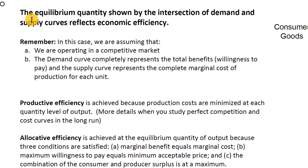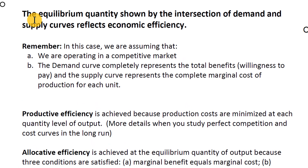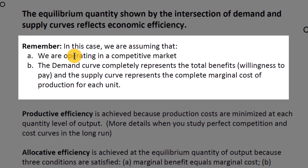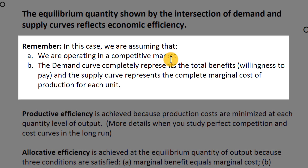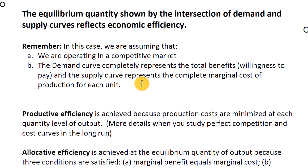Proving efficiency is a bit complicated, but we want you to grasp it intuitively. We're assuming a competitive environment — perfect competition means many small buyers and sellers producing and consuming the same thing, with no monopolies. We're also assuming the demand curve completely represents total benefits, meaning no externalities — no positive or negative externalities. The supply curve represents the complete marginal cost of production, so there's no pollution or uncovered costs being ignored by the producer.